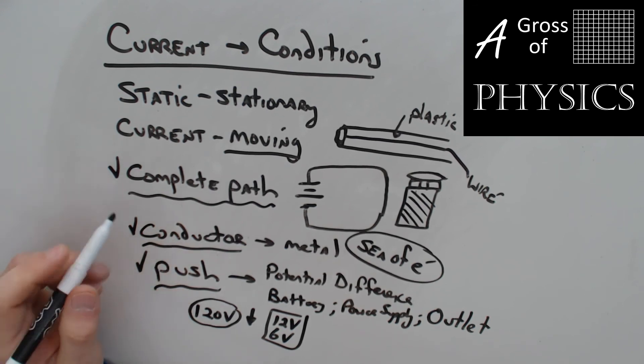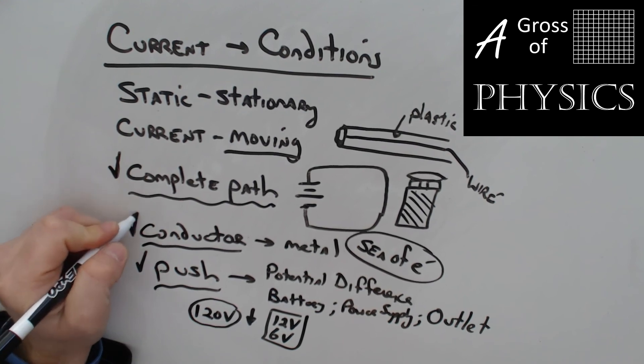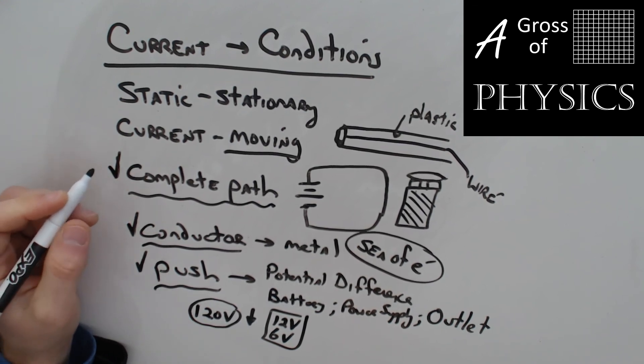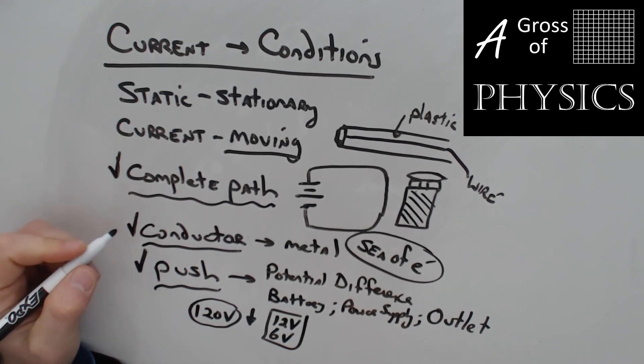But in order for current to exist, you need three things. You need a complete path, a conductor, typically metal, wires in this case, and a push. And the push is going to be caused by a battery or a power supply or a wall outlet.